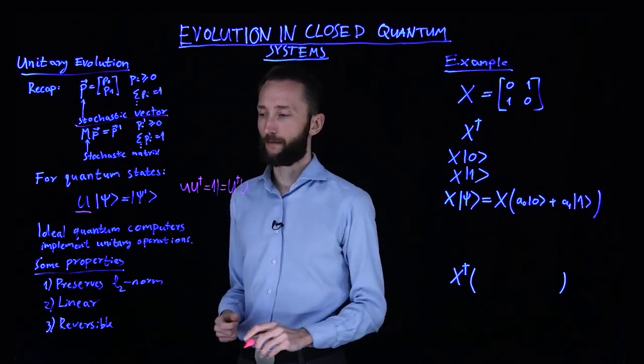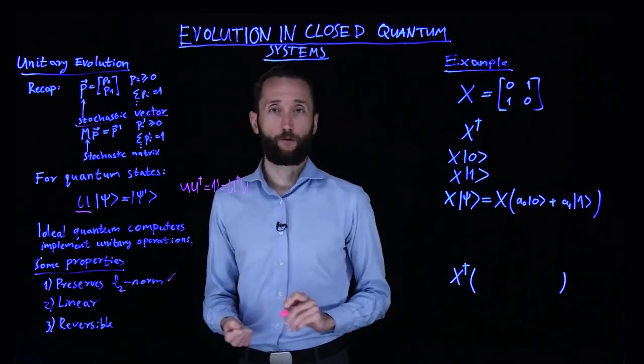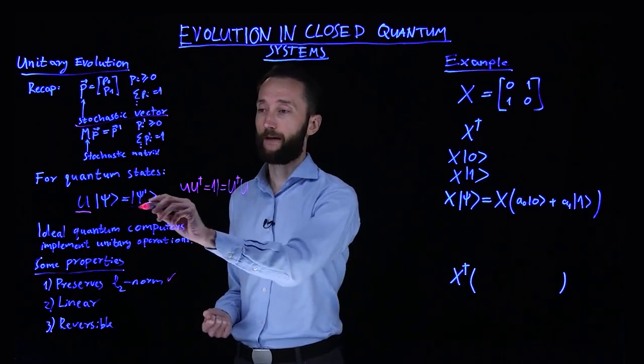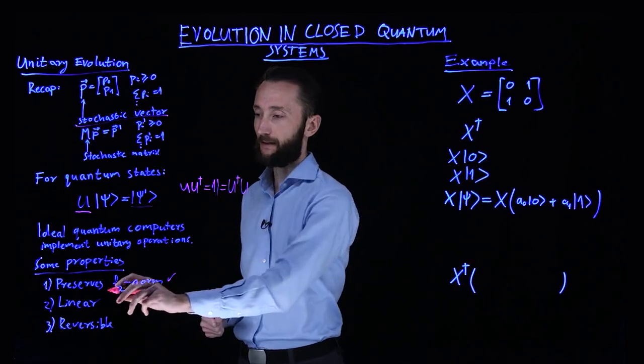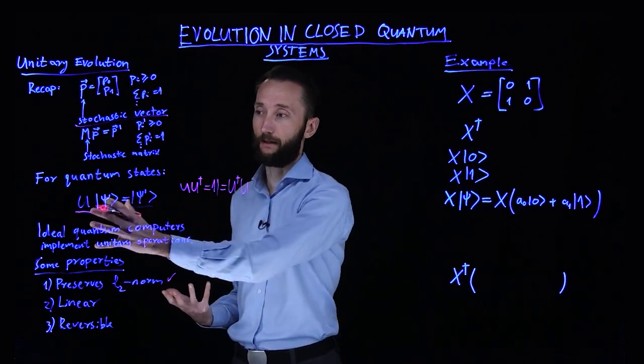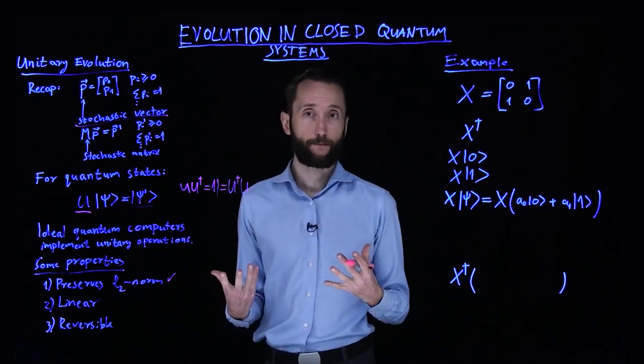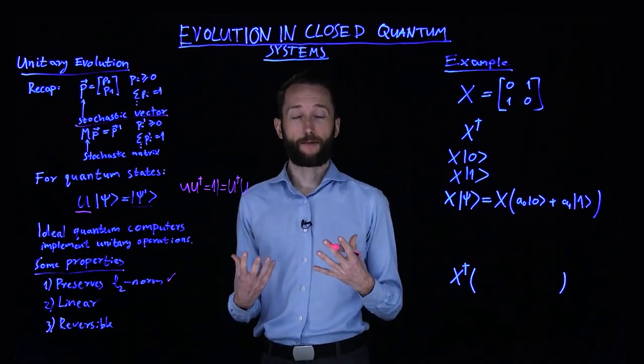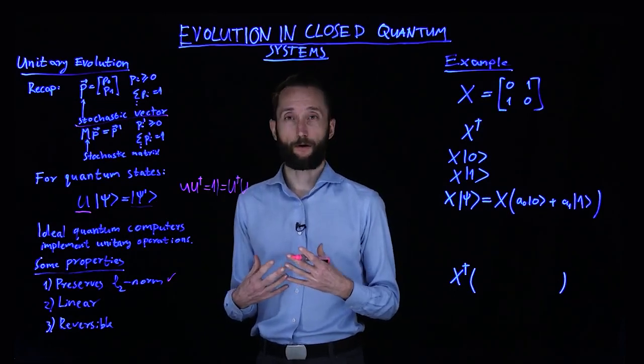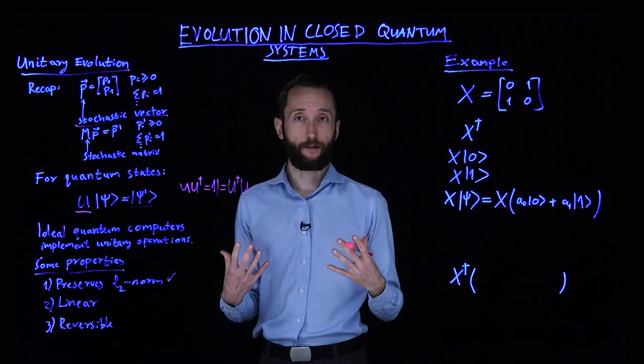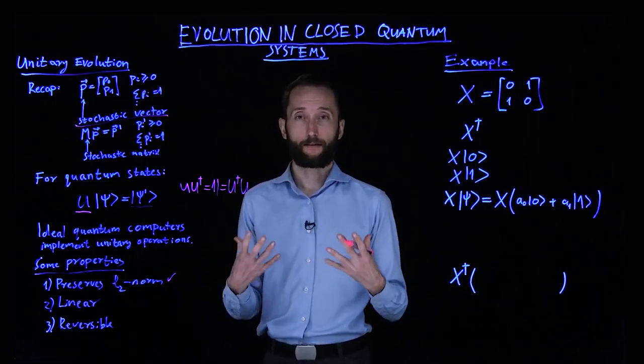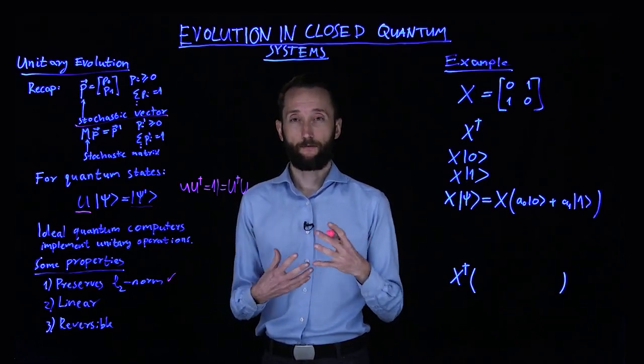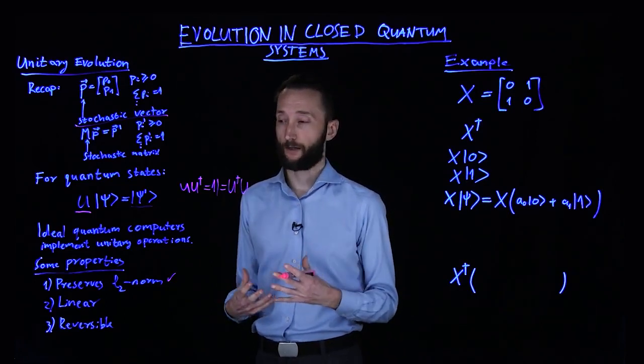And it has some consequences. Obviously, it preserves the L2 norm. Otherwise, the final result would not be a quantum state. And it's also linear since we only apply matrix on a vector. This becomes a little bit difficult when we want to apply nonlinear operations. For instance, we want to do some machine learning algorithm that's intrinsically nonlinear, then we have to resort to all sorts of approximations and tricks.